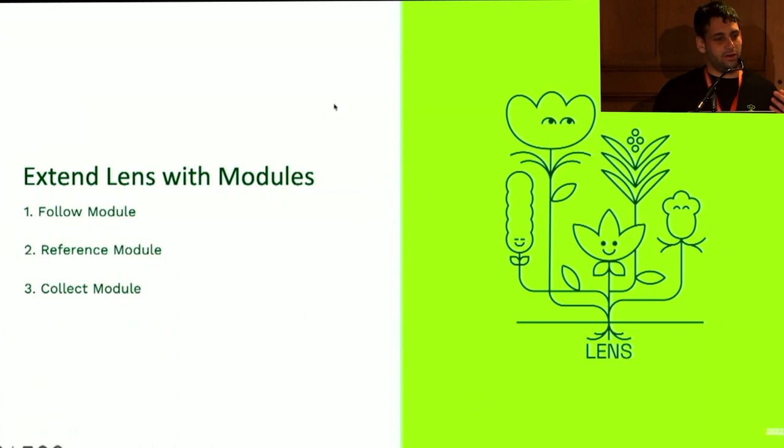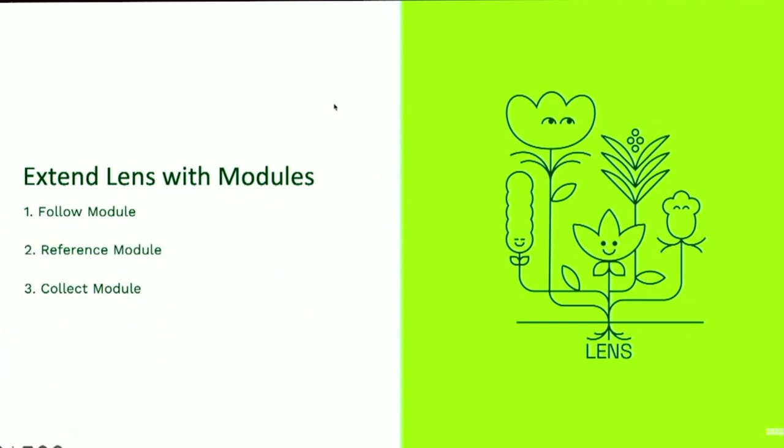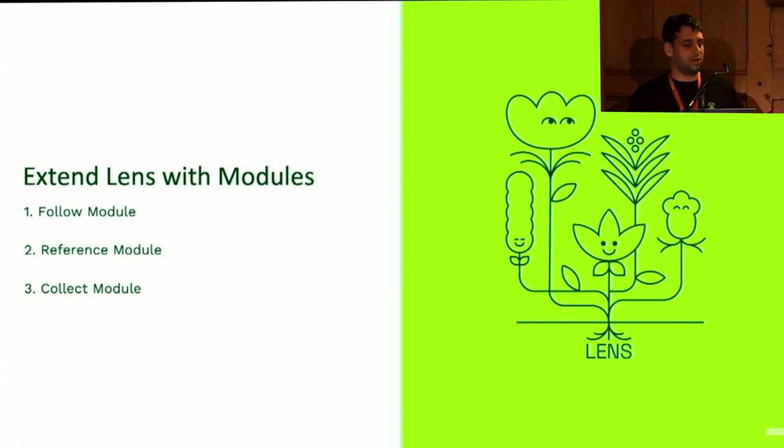Now that's the base. How can you extend Lens? If you're a Web3 developer, the first thing you should really start to look at with Lens is these things called modules. Modules are ways to run arbitrary logic that return some Boolean value that will result in either the mint or rejection of some action. There are three types: a follow module, a reference module, or a collect module.